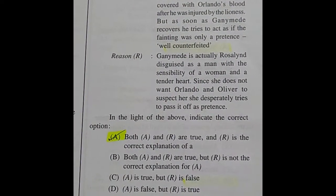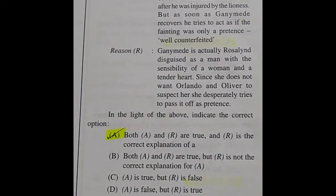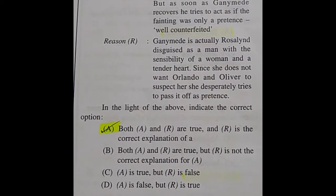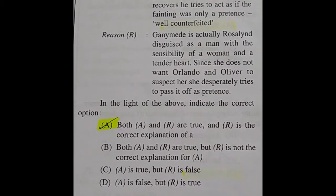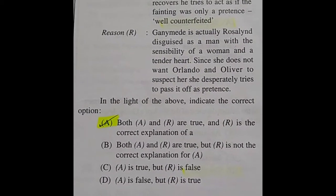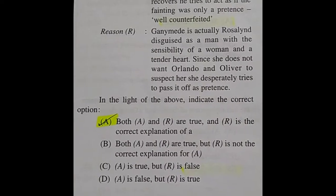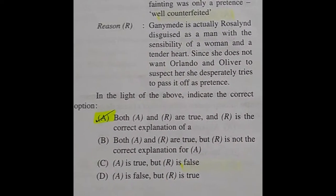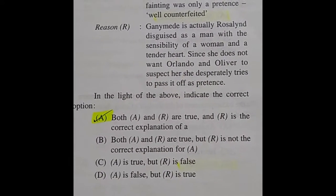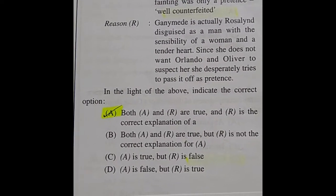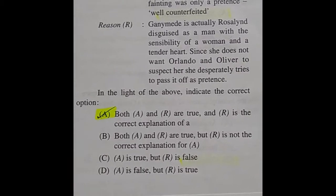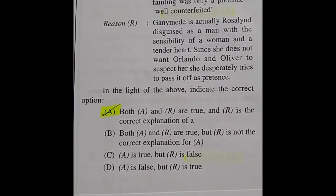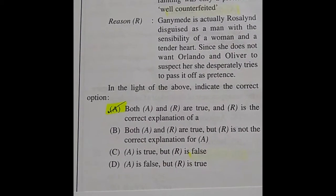Question 4: Given below are two statements — Assertion A and Reason R. Assertion: In As You Like It, Ganymede faints when he sees the handkerchief covered with Orlando's blood after he was injured by the lioness, but as soon as Ganymede recovers he tries to act as if the fainting was only a pretense — 'Well counterfeited.' Reason: Ganymede is actually Rosalind disguised as a man with the sensibility of a woman; since she does not want Orlando and Oliver to suspect her, she desperately tries to pass it off as pretense. The answer is both A and R are true, and R is the correct explanation of A.